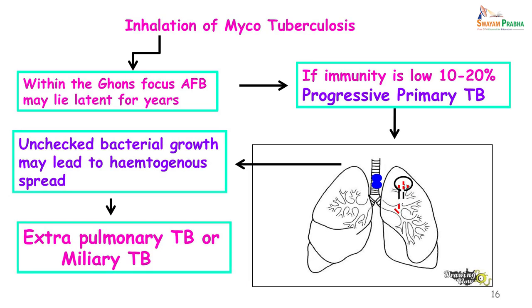If progressive primary tuberculosis goes unchecked, the bacteria can spread hematogenously. They have the ability to live within macrophages — when ingested by the macrophage, they form a phagosome, resist destruction by lysosomal enzymes, remain within the phagosome, and multiply. This is then carried to different parts of the body and the patient can end up with extra-pulmonary tuberculosis or miliary tuberculosis.